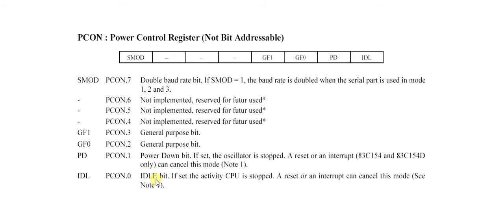The last bit is the idle bit. If it is set, the CPU activity is stopped. A reset or interrupt can cancel this mode. So the PD and idle bits are used to save power, the general purpose bits are for general use, and SMOD is used to double the baud rate. That's all for PECON.